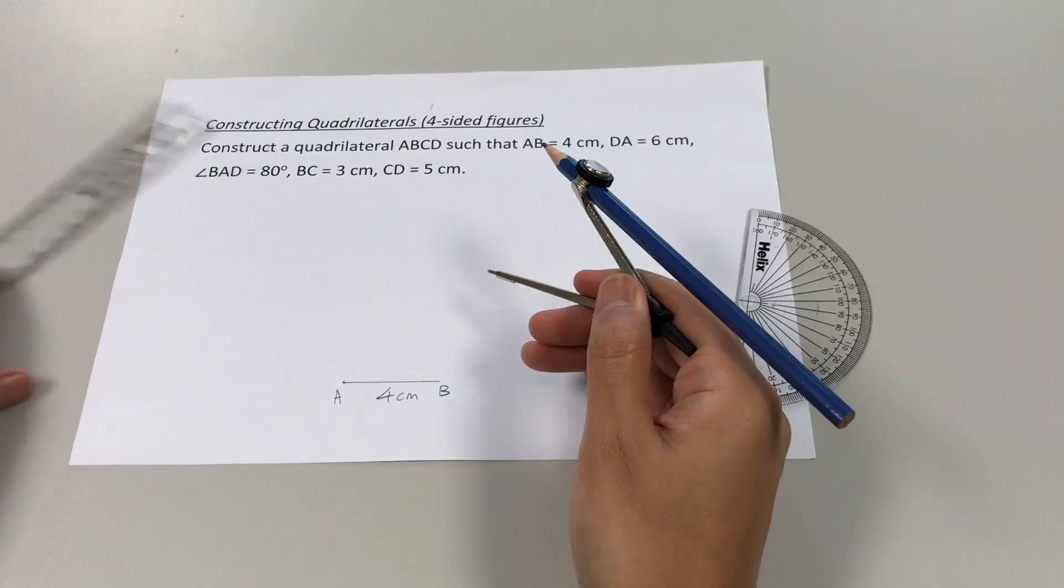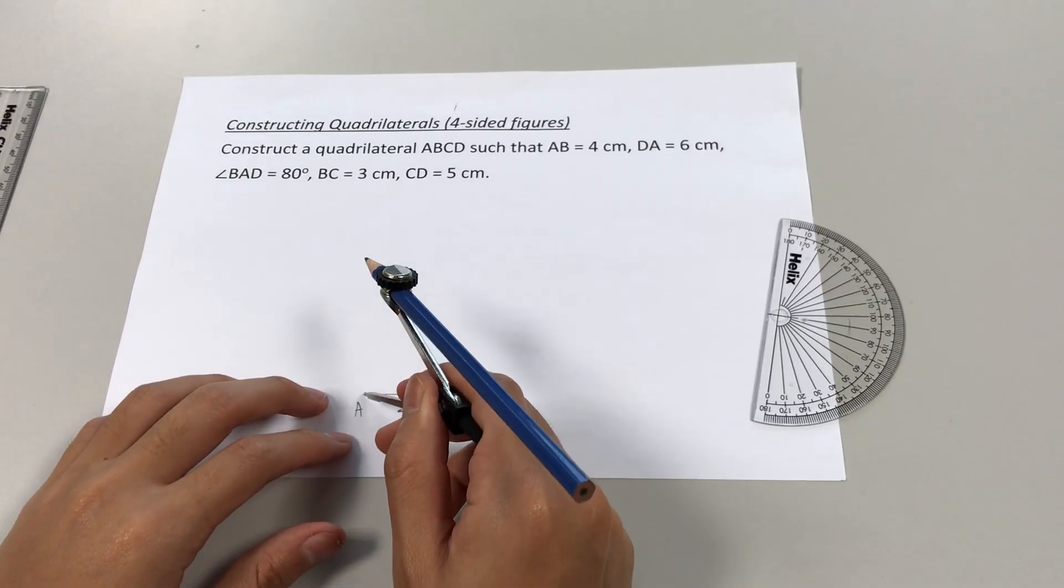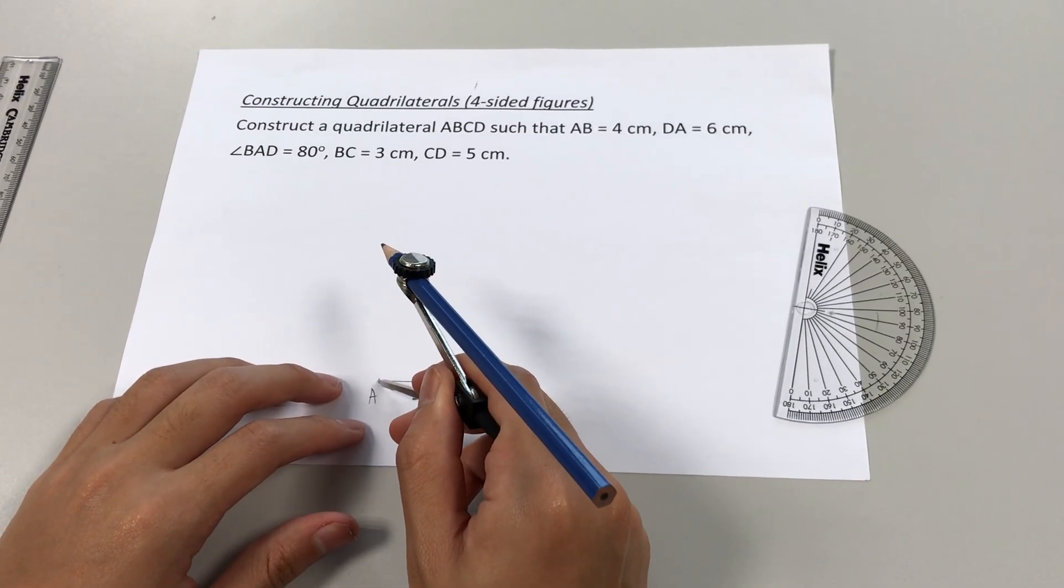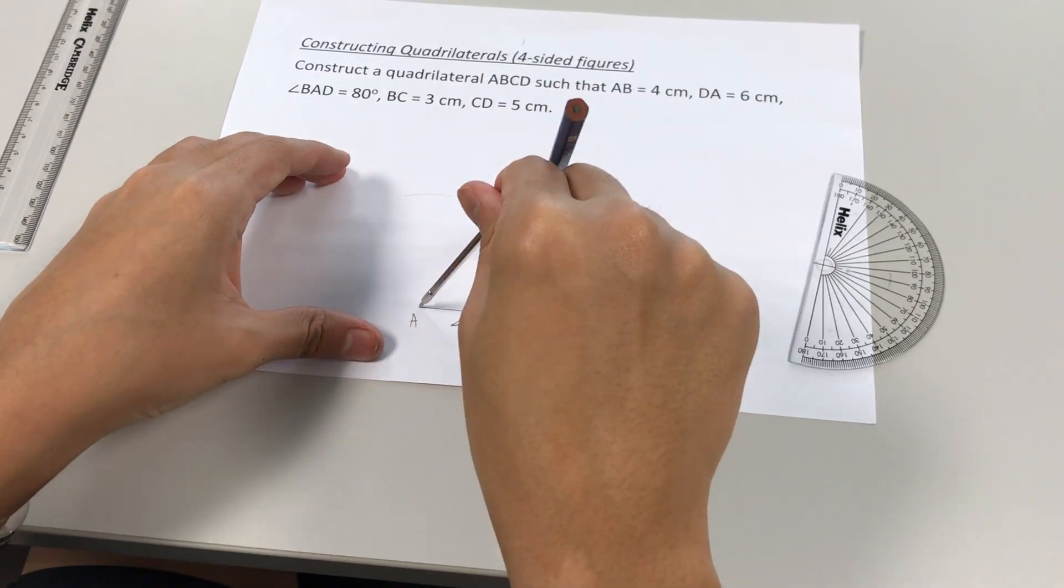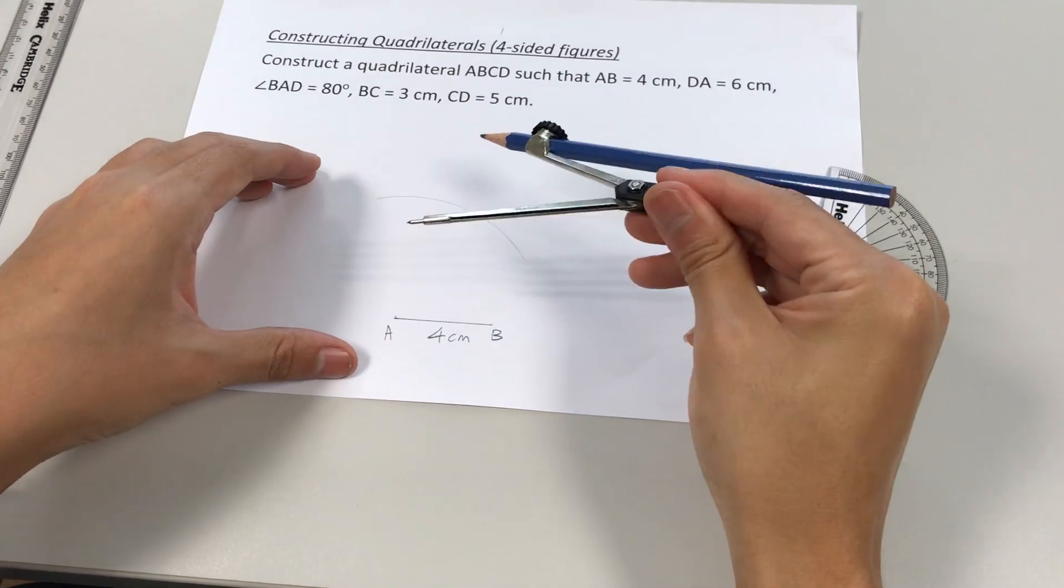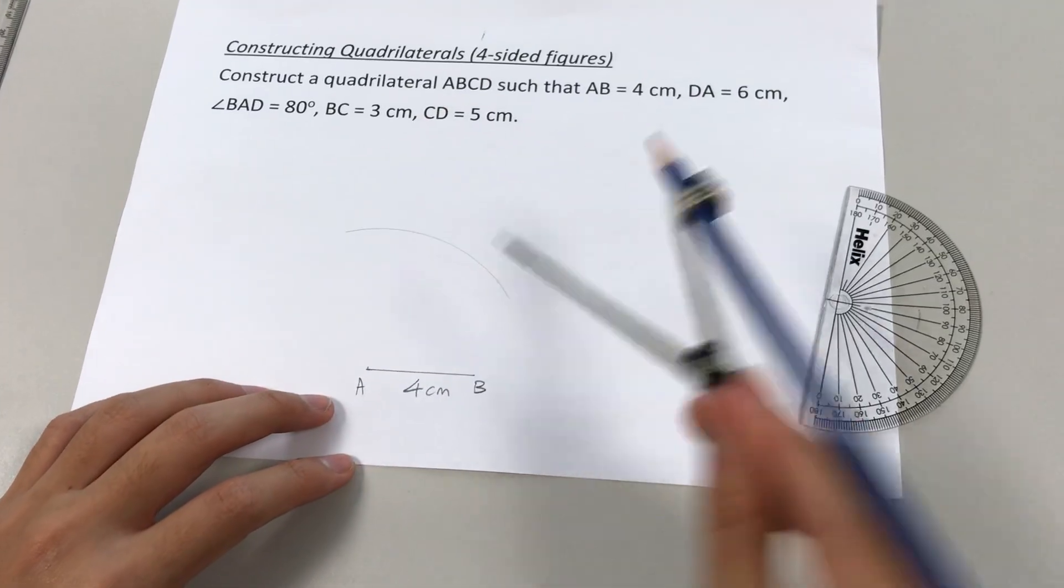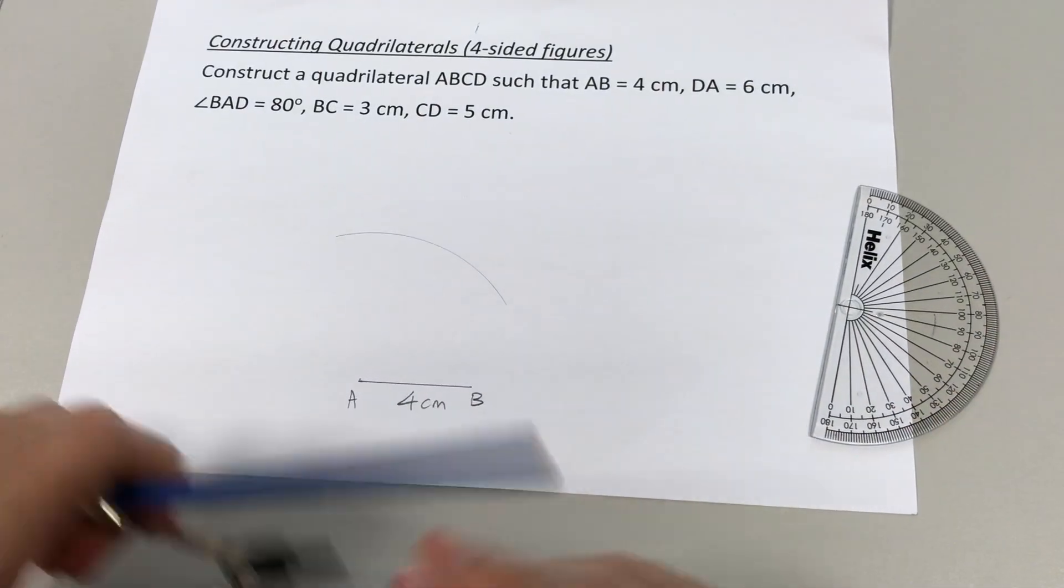We'll put the needle at A. Draw a curve lightly to mark out where point D would be. All right.